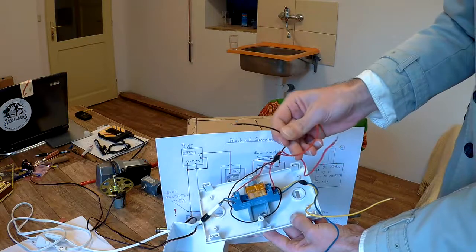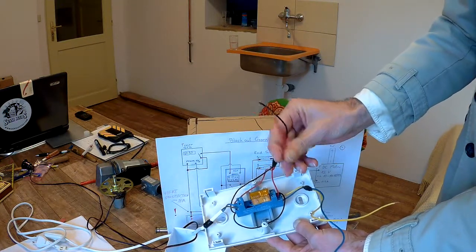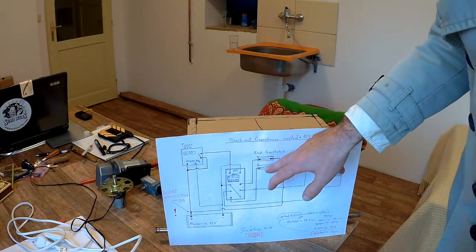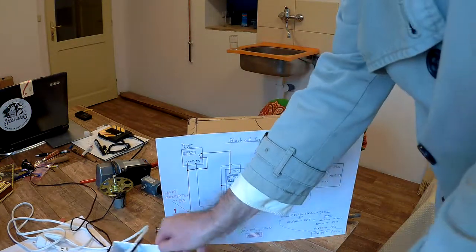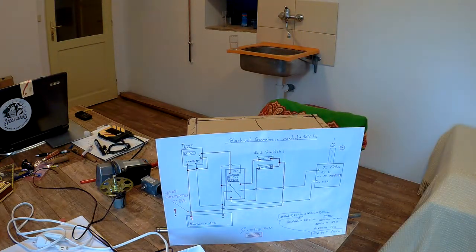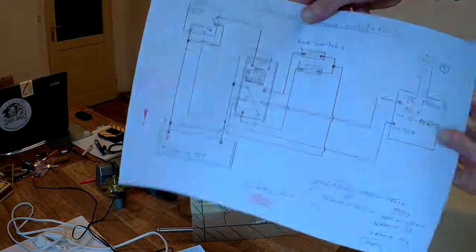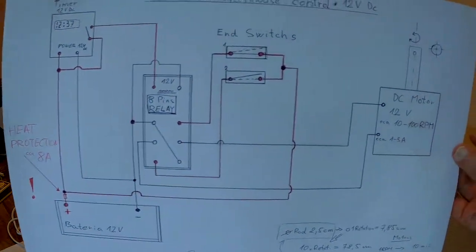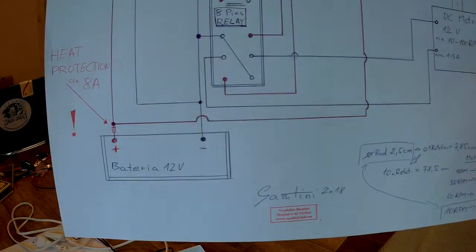These two points go to the motor. This black one is the negative. These two red ones are positive, go at first to the end switches and next to the positive one. Sorry for the noise. So it's all. I again can show you the paper: timer, eight pin relay, and switches, and some motor, battery.